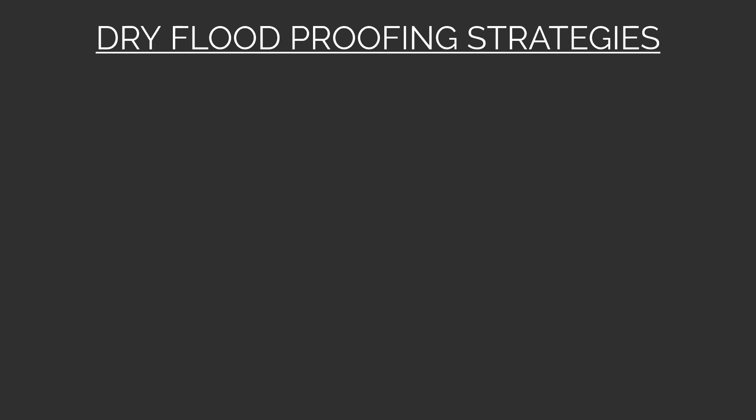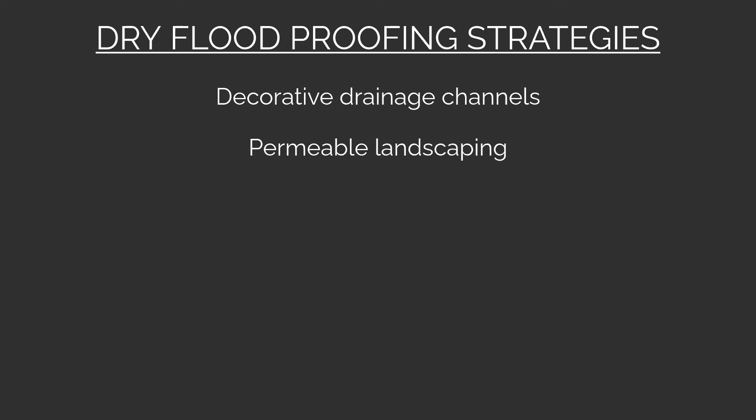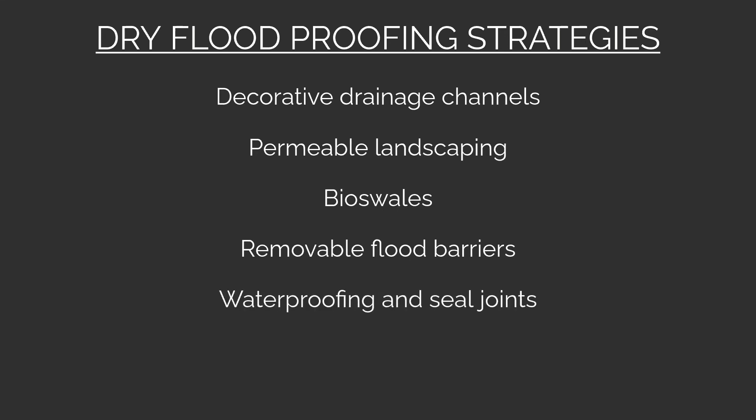To summarize, dry flood proofing techniques help keep water out of the house — such as decorative drainage channels, permeable landscape materials, bioswales, removable flood barriers, waterproofing and sealing joints and cracks, and a stronger building structure. In part four I'll look at what you can do to prepare your house for if water does make it inside — how your house can best survive being inundated or partly submerged to minimize damage. If you want to discuss these strategies right away, feel free to get in touch by booking a project consultation call from my website.